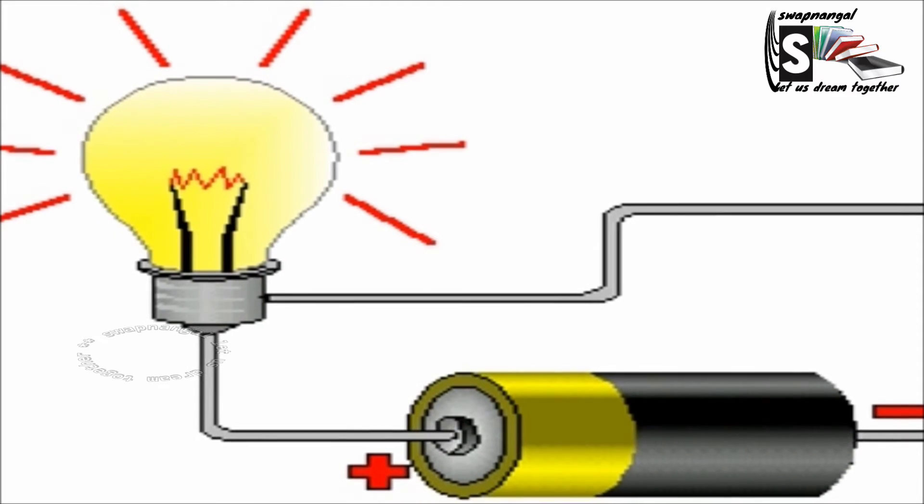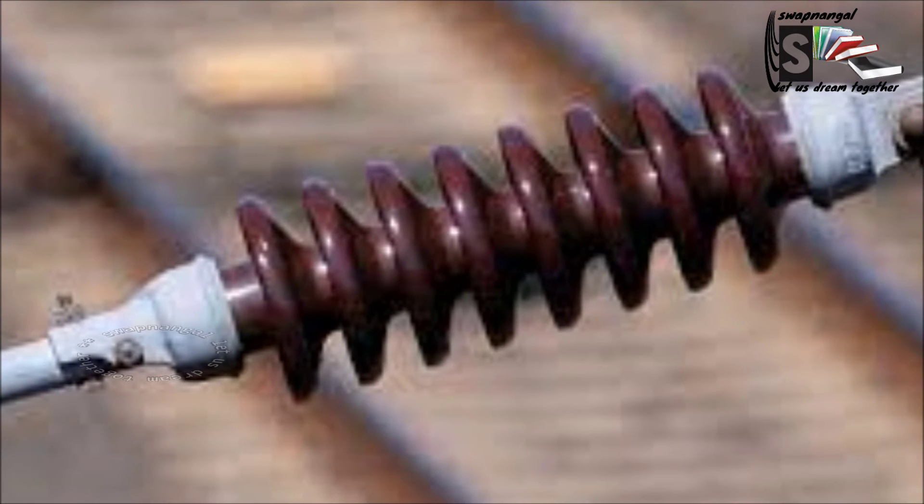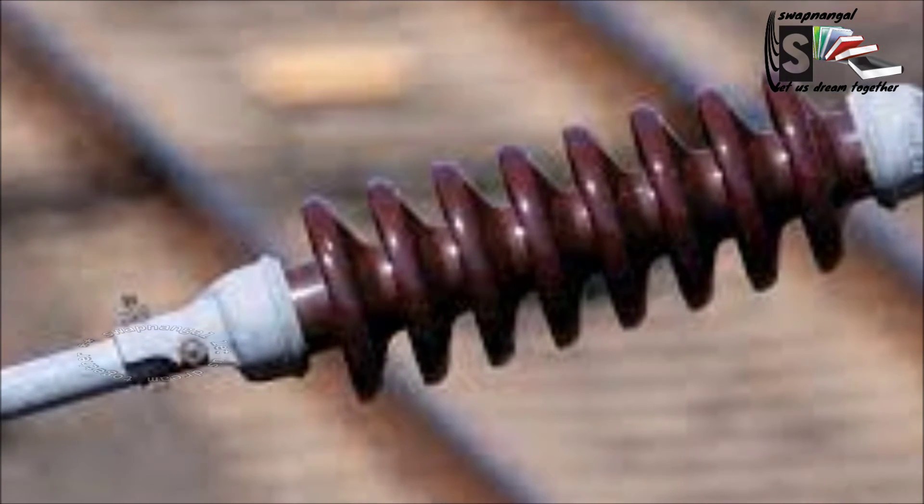The next property is electrical conductivity. Some materials like copper allow electricity to move through them while others do not. Materials that allow electricity to move through them are called electrical conductors. Materials that do not allow electricity to move through them are called electrical insulators.